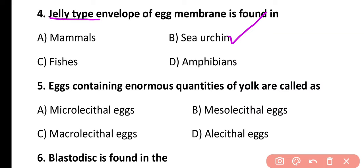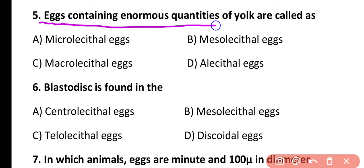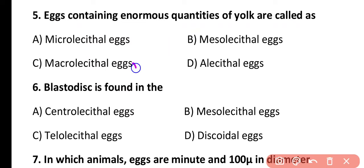Question 5. Eggs containing the largest quantities of yolk are called microlecithal, mesolecithal, macrolecithal, or alecithal? The correct answer is option C. Eggs containing the largest quantities of yolk are known as macrolecithal, while eggs with a small amount of yolk are known as microlecithal.